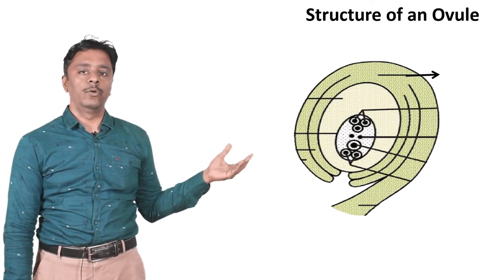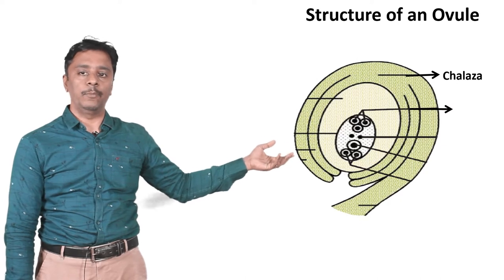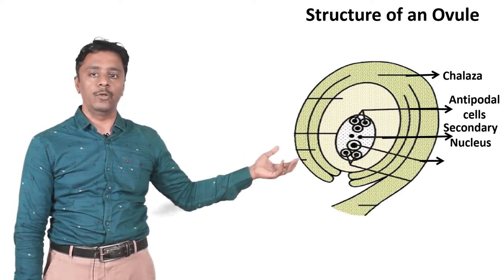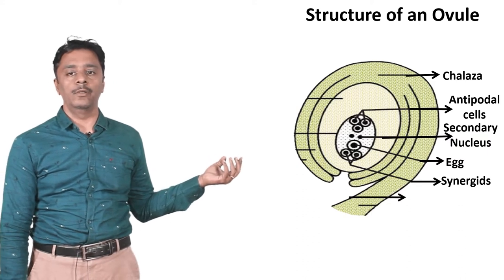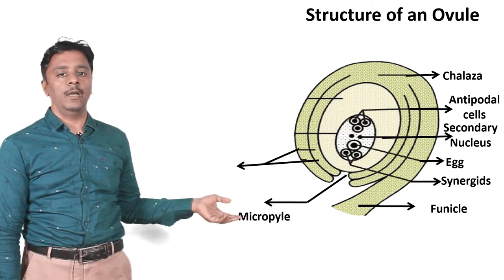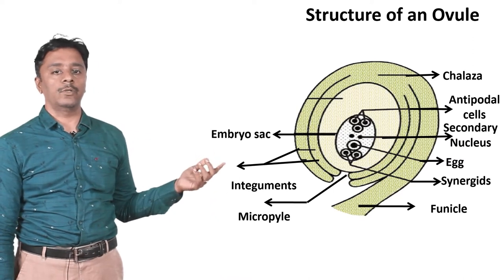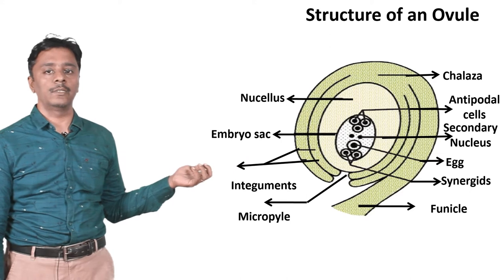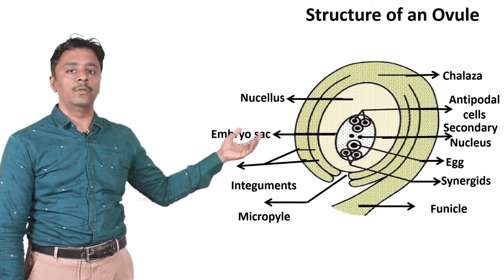The structure of an ovule includes: chalaza — the nutritive part which gives nutrients to the inner cell; antipodal cells; secondary nucleus — which is important; egg; synergids, which give nutrients to the egg; funicle, which holds the whole structure of the ovule; micropyle, through which the fusion is going to take place; integuments, which help for the fusion; embryo sac, which helps to keep the egg safe in position; and nucellus, which gives nutrients to the whole inner side including the egg, secondary nucleus, and synergids.